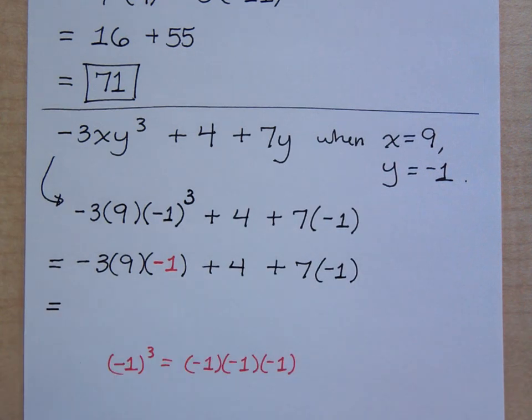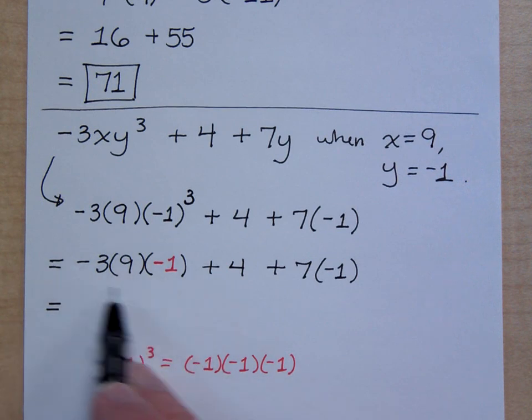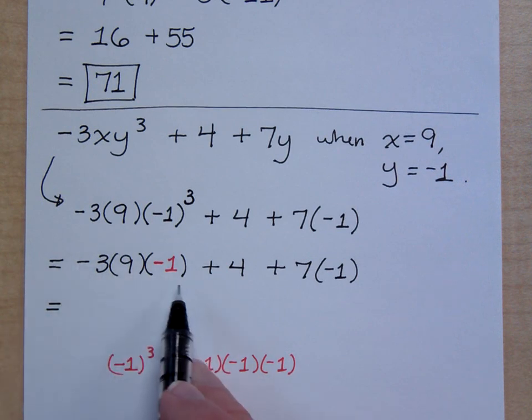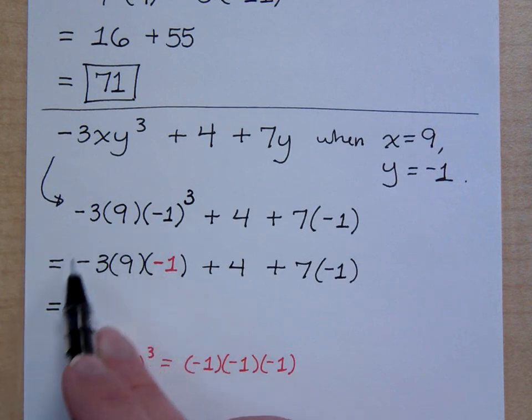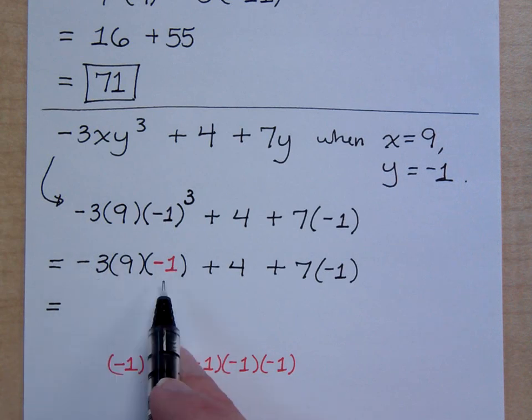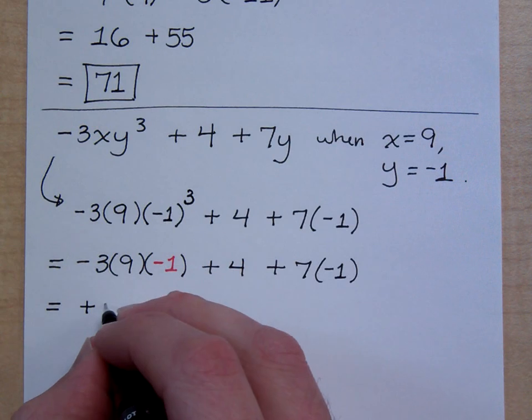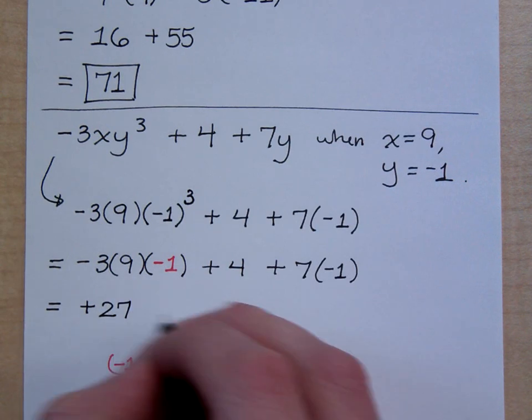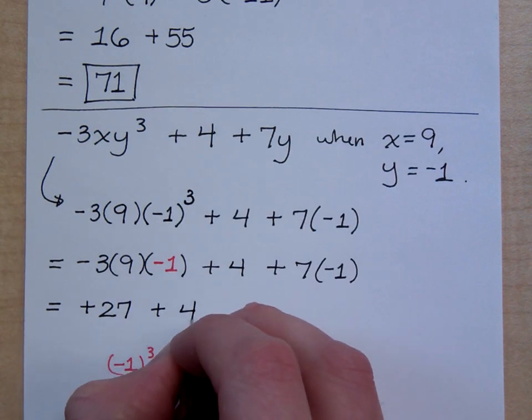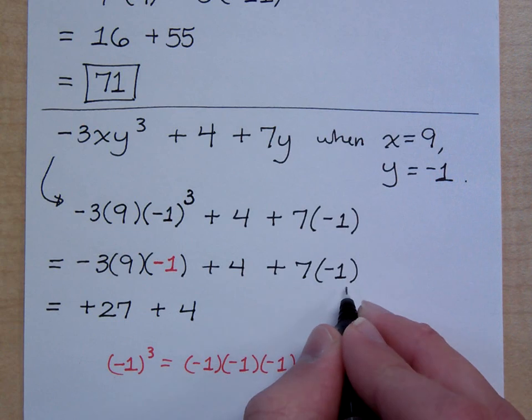Plus 4 plus 7 times negative 1. So what's negative 3 times 9 times negative 1 because all of this is stuck together. What is the sign of all of this? It's a positive. What's 3 times 9? 27 times 1 is 27. Plus 4. And what about 7 times negative 1?